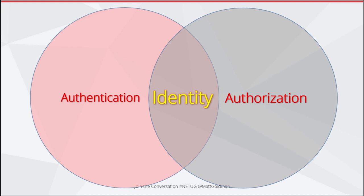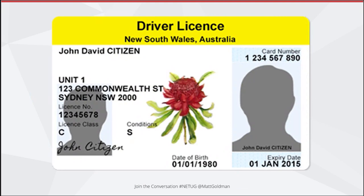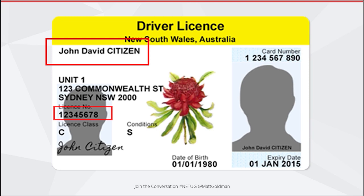Authorization is what you're allowed to do — what you're authorized to do. I've said I'm Matt Goldman, I've proved it, I've authenticated — what am I authorized to do? Where authentication and authorization overlap, they form your identity. Using a driver's license as a concrete example: your name is your identity, your license number is authentication — it can be looked up in the RMS database and verified. The license class — for example 'C' — is authorization: you're authorized to drive a car. In my case I have an additional class for motorcycles.